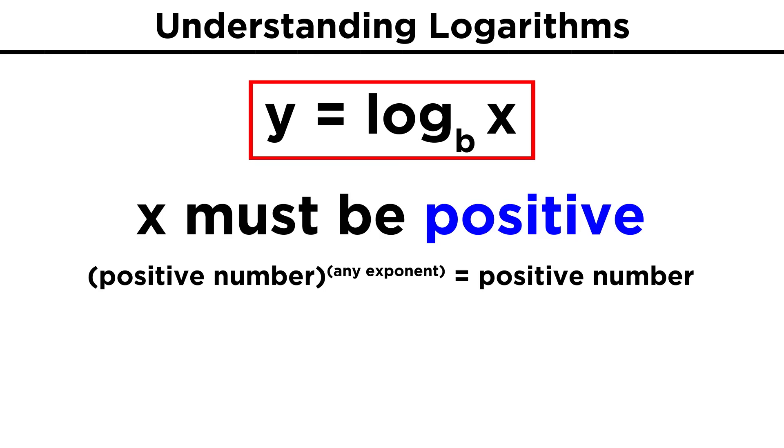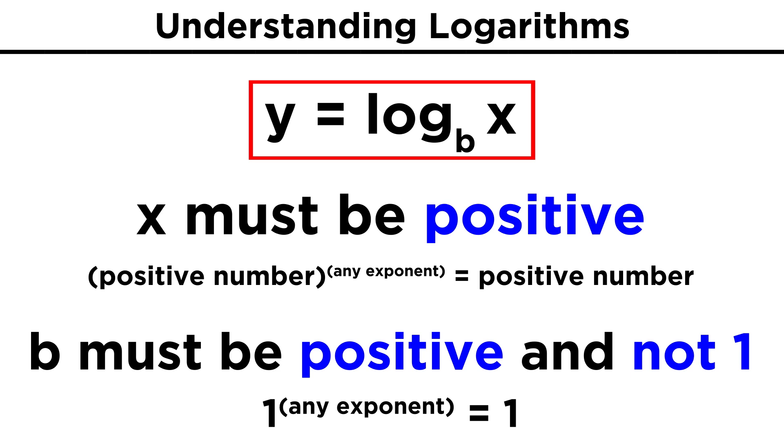The only constraint on logarithmic functions is that x must be positive, because there is no way to raise any number to some power and get a negative number. And b must be positive, but not equal to one, because one raised to any exponent can only be one.